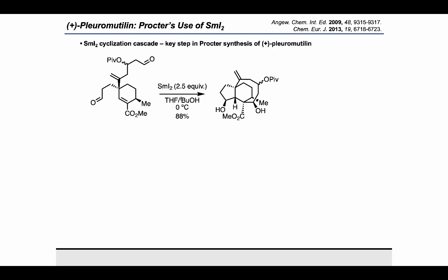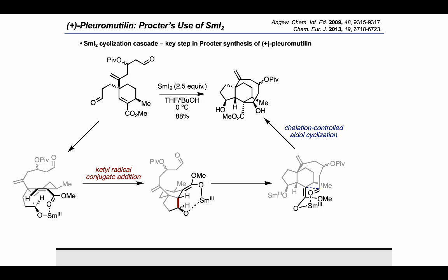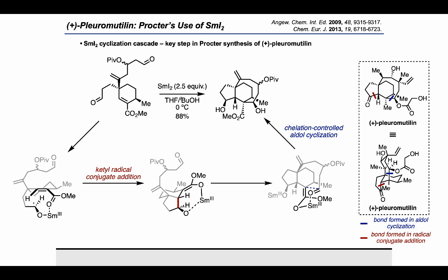They started by generation of a ketyl radical, which was able to undergo a radical conjugate addition to form, after a further 1-electron reduction, a samarium enolate, which was able to undergo a further cyclization via a chelation-controlled aldol addition. This process resulted in the formation of the congested core of the target plurimutalin, where we can see the bond formed by the aldol addition in blue and the bond formed by the radical conjugate addition in red, both of which appeared in the final target.